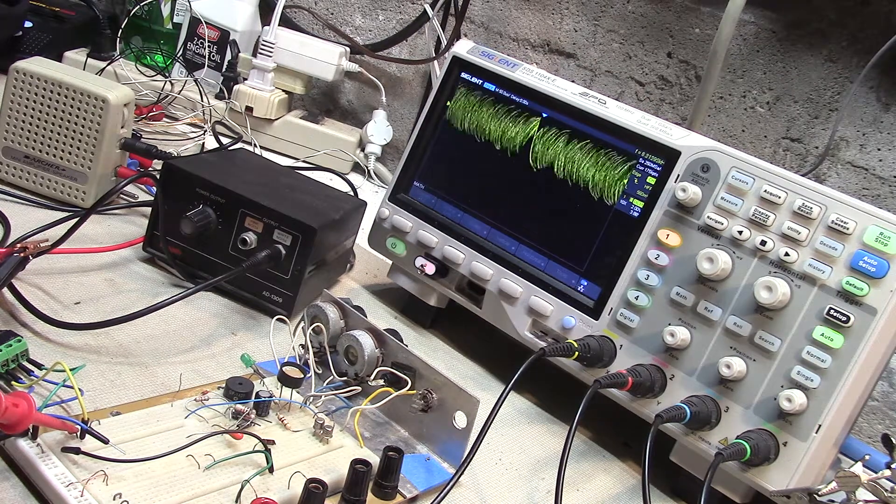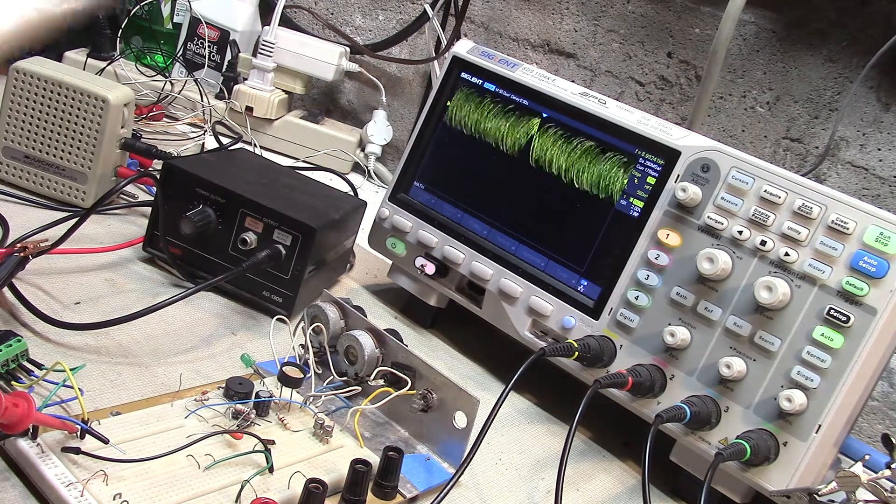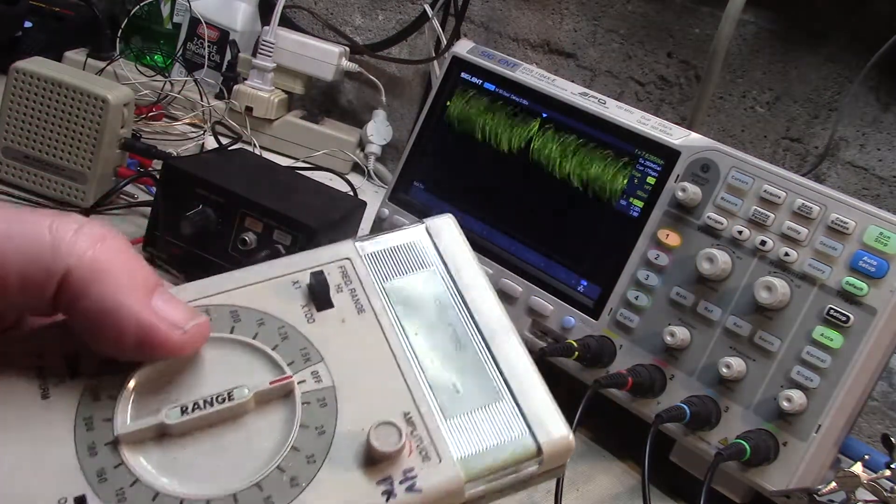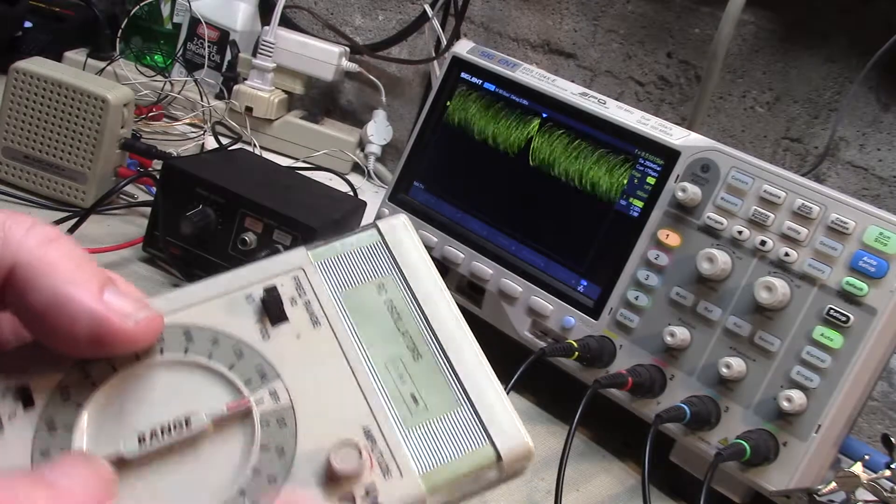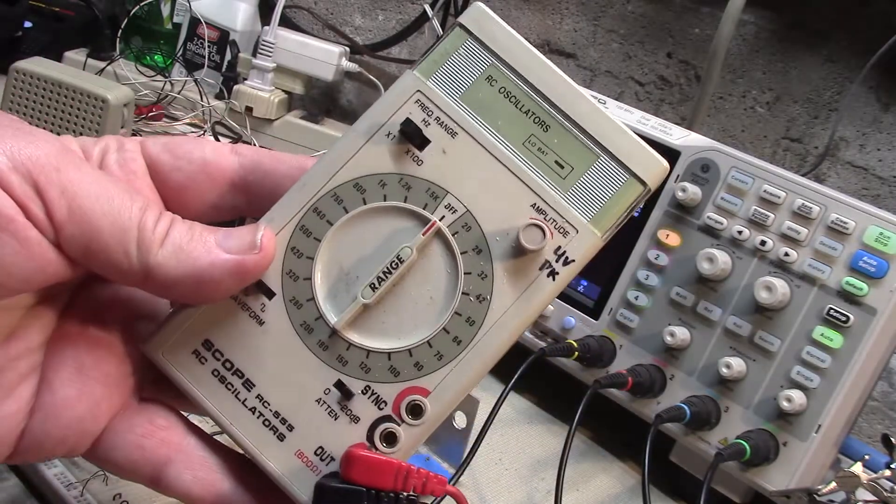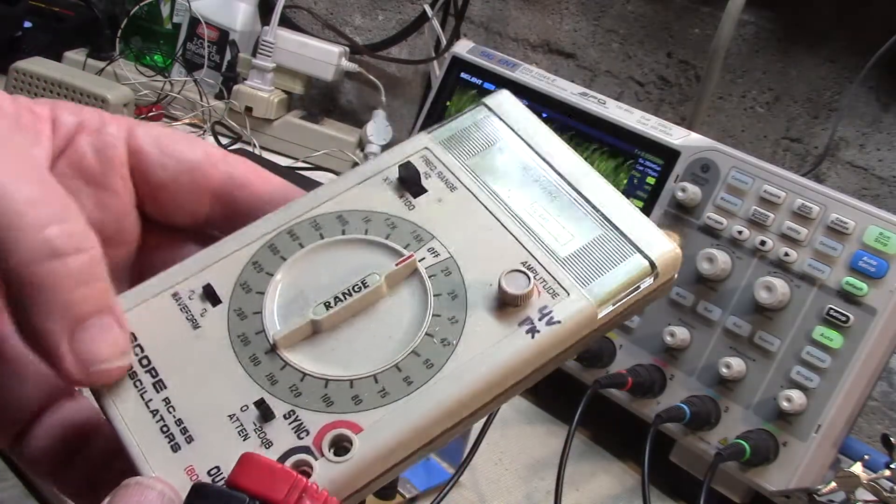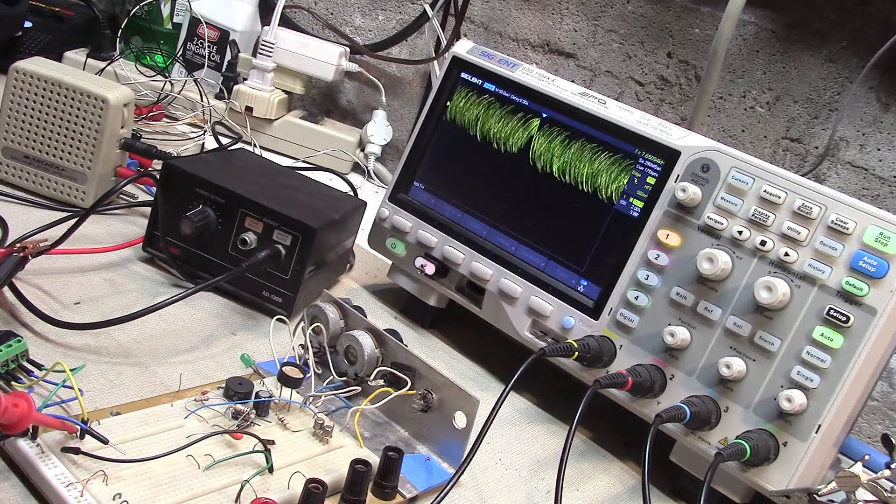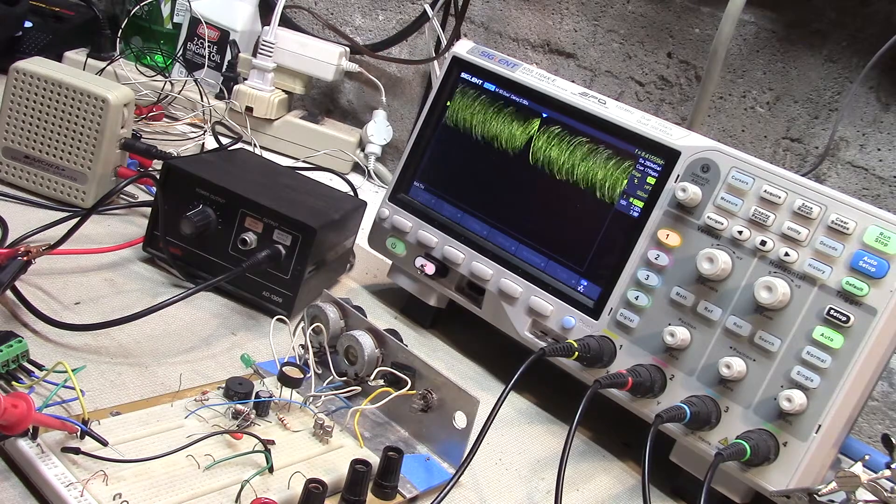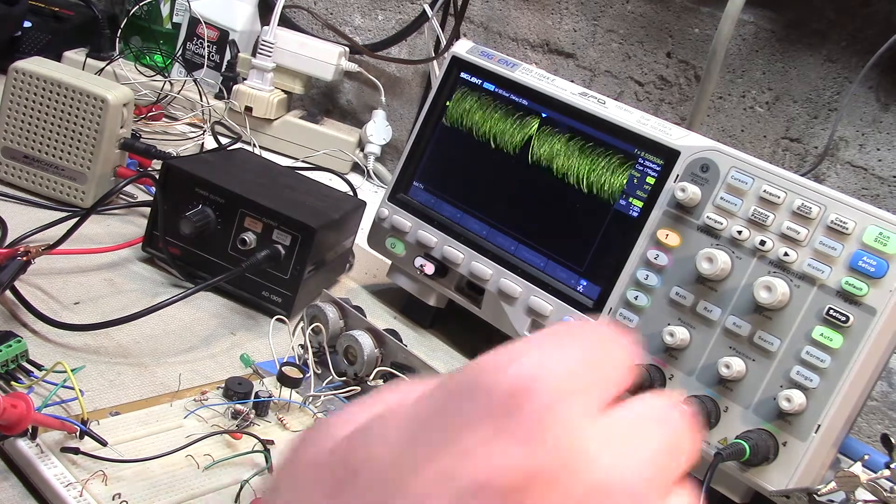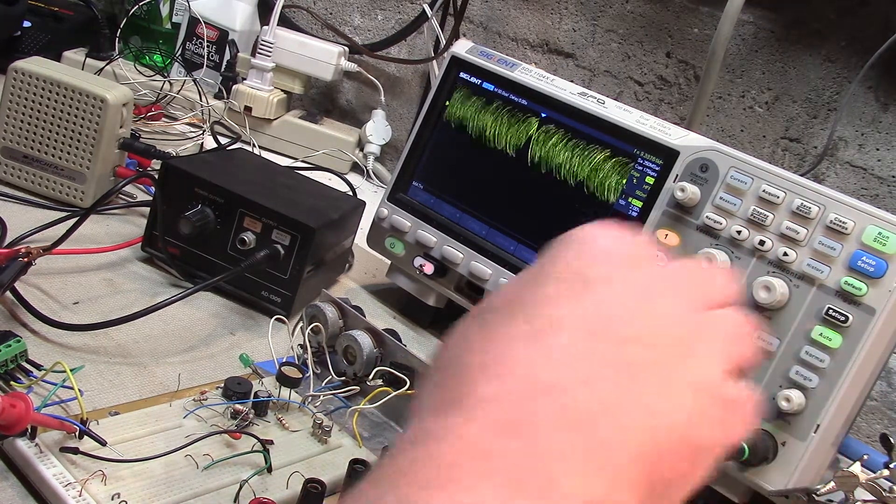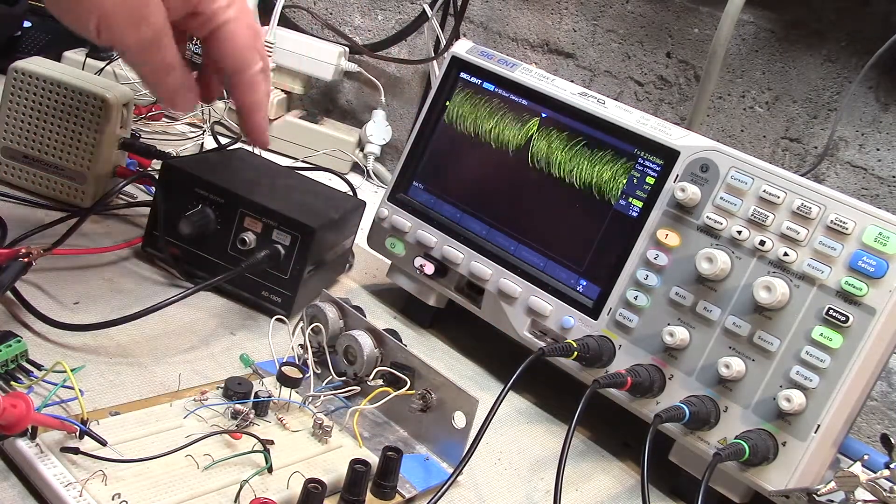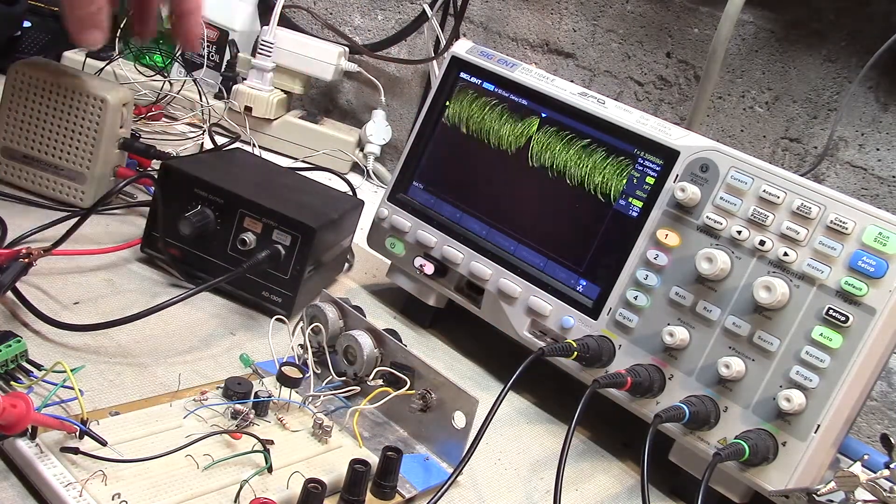So now, on the other piece of gear, about the same age as this old oscillator, this is a nice analog sine oscillator, about the same vintage. So, this scope has a lot of math options. If you look at the spectrum of this white noise source through the amp, you go to the math.